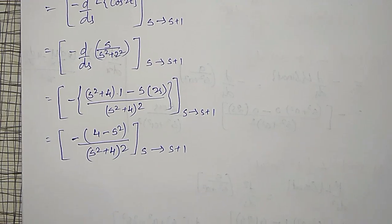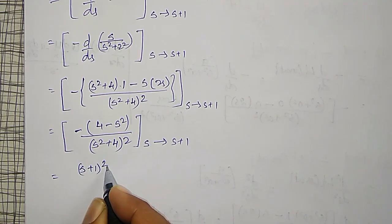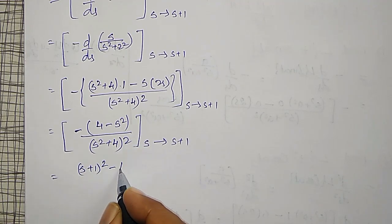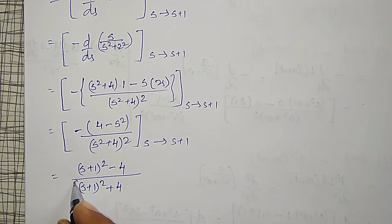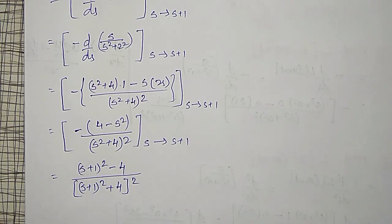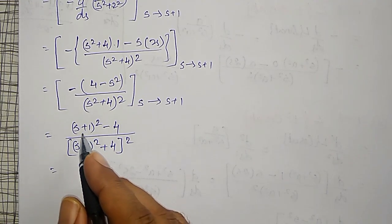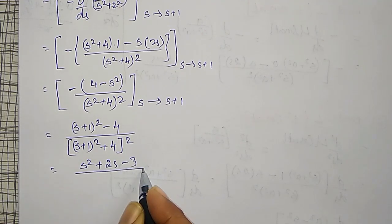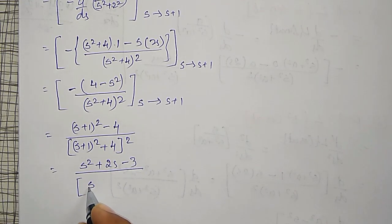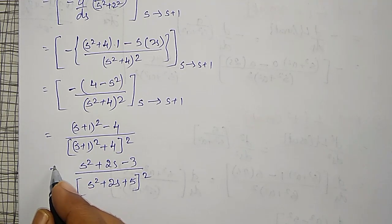Therefore the required answer is: minus of minus is plus, and s replaced by s plus 1 gives: s plus 1 whole squared minus 4, divided by s plus 1 whole squared plus 4, the whole squared. Expanding: s squared plus 2s plus 1 minus 4 is s squared plus 2s minus 3, divided by s squared plus 2s plus 5, the whole squared.